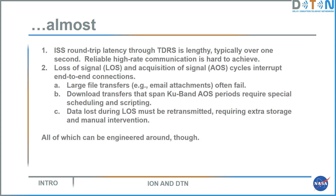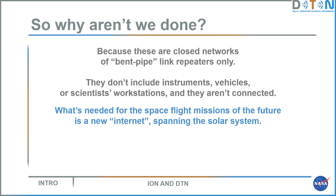Any data that needs to be transmitted during a loss of signal period has to be stored and retransmitted, and that retransmission needs to be commanded. You can engineer around all of this, but even so, these are closed networks of bent-pipe link repeaters only — they're not true networks. They don't include the endpoints that are the users of the network, such as instruments or scientific workstations. They don't reach end-to-end from a principal investigator's laboratory to an instrument on board the space station. For truly automated end-to-end communication with vehicles in space, what's needed is a new internet spanning the solar system.